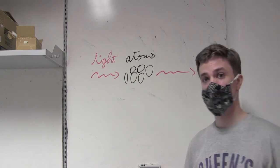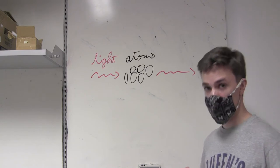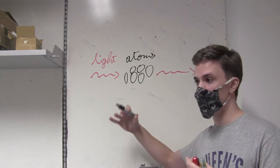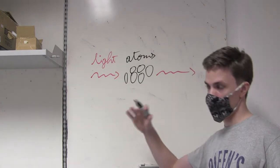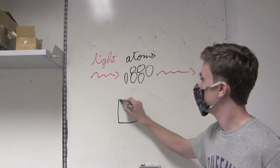So first, we need to isolate atoms. In our lab, we use rubidium atoms. And to trap, to isolate them from anything else, like air molecules or other atoms, we put them in a vacuum.